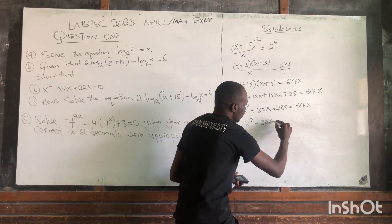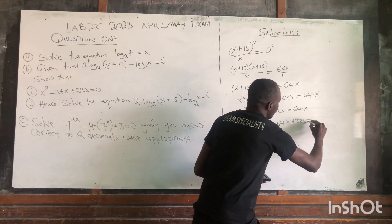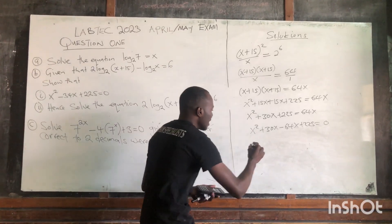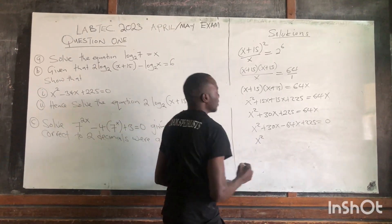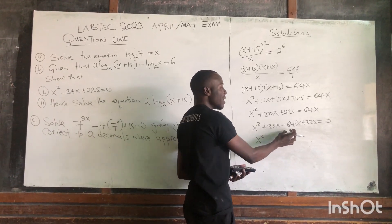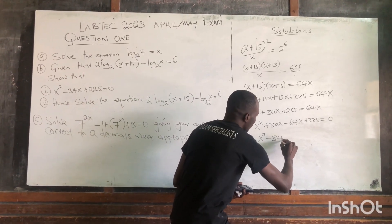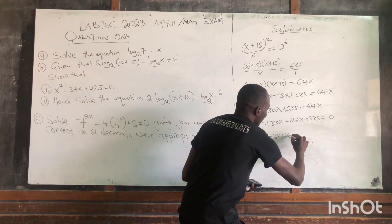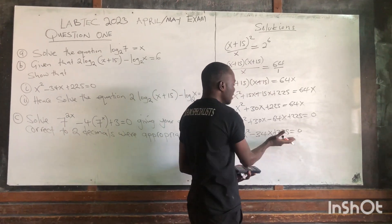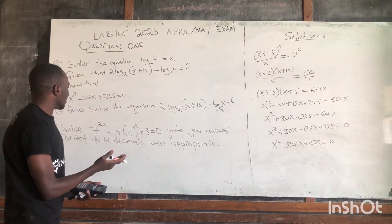when it crosses the sign it will be minus. This is 4x, plus 225. This side you have nothing, so you can put a 0 there. So here x squared, we are going to do the subtraction: 30x minus 64x, this one will give us minus 34x, plus 225 is equal to 0.